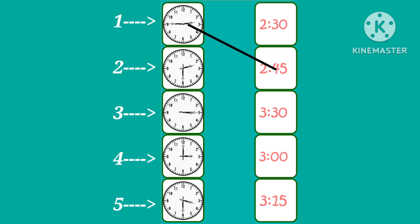Number two is 2:30. Number three is 3:15. Number four is three o'clock. Number five is 3:30.